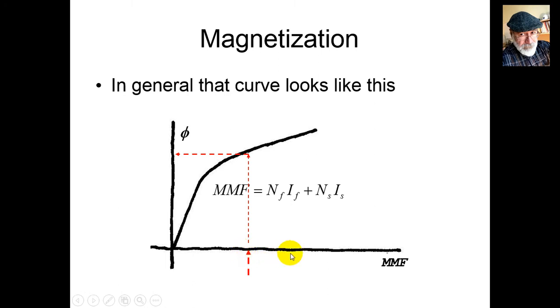The manufacturer decided to divide that value by NF and present the horizontal axis as IF*, IF asterisk. That's the value on the horizontal axis - the equivalent field coil current that would create the same total magnetomotive force as both coils combined.